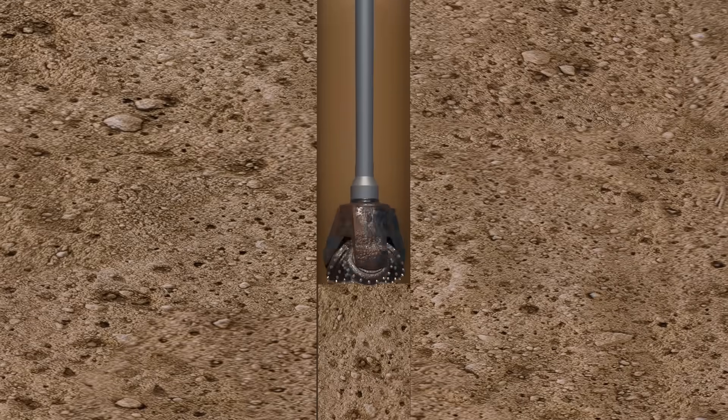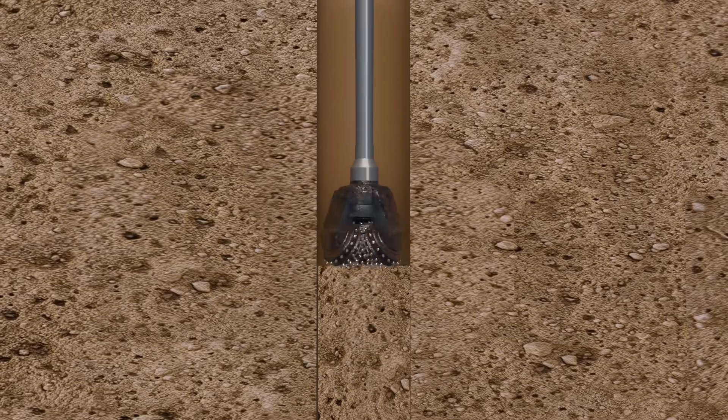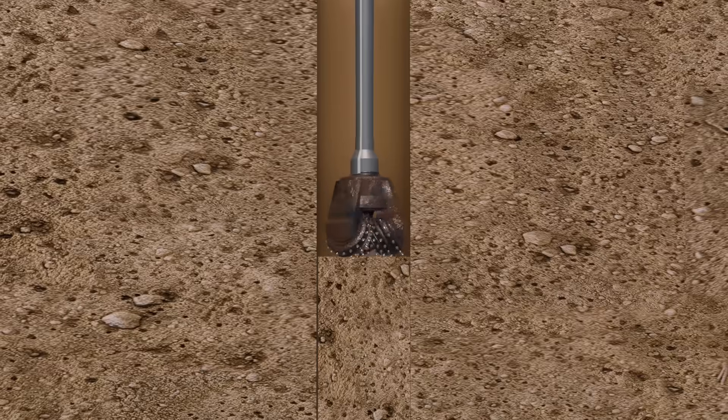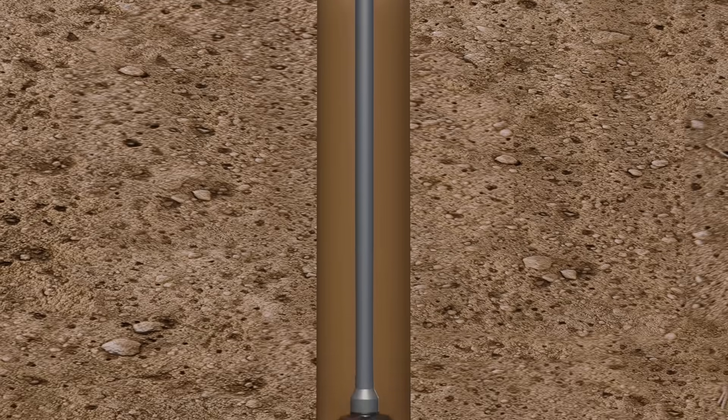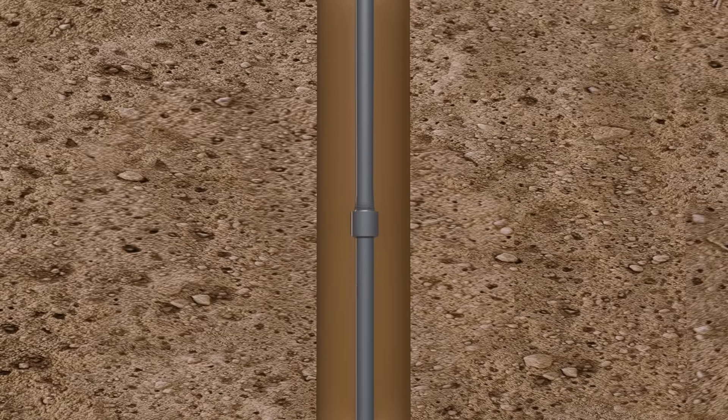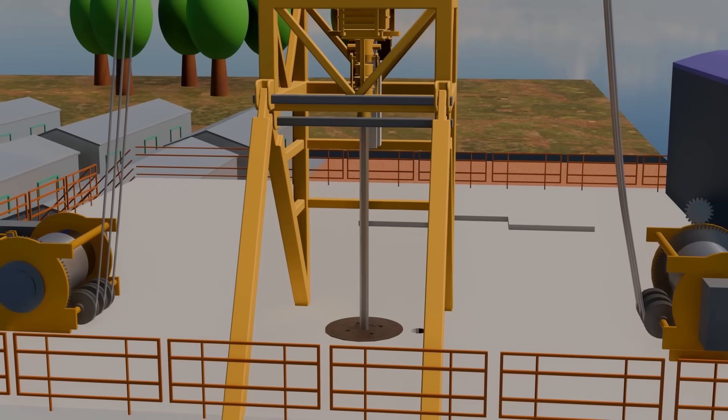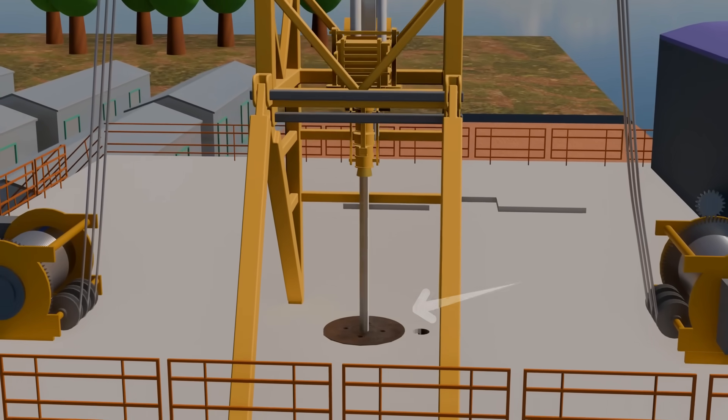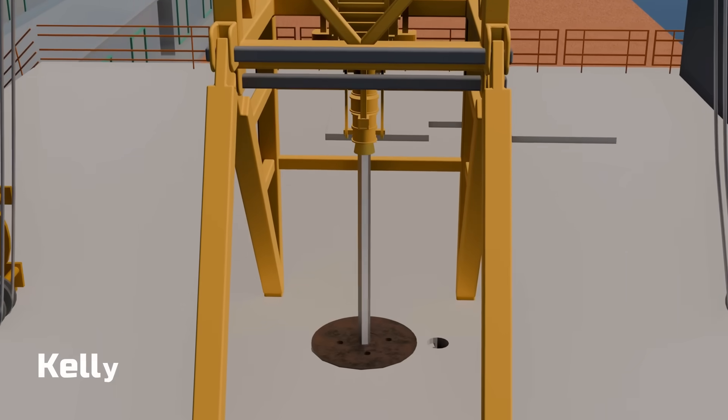As the bit cuts deeper, sections of steel pipes are joined one after another to form a long assembly called the drill string. As drilling progresses, more pipes are added to extend the string further into the ground. Rotating such a long drill string, sometimes extending over two kilometers, poses a huge mechanical challenge. In borehole machines, the drill bit is usually operated using high-pressure air, but in oil rigs, the entire drill string is rotated using a drive system called a kelly drive.